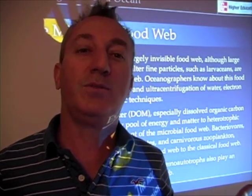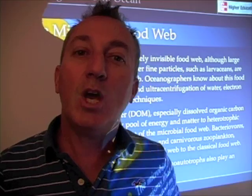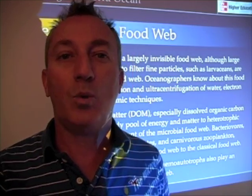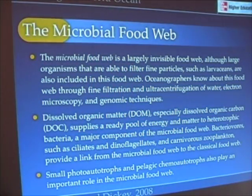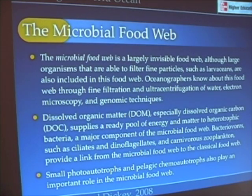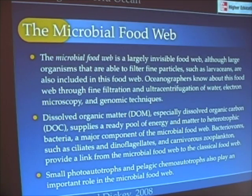The invisible microbial food web was largely unknown to us, and what we can't see is very difficult to understand until you develop ways of actually observing those kinds of organisms. This food web depends a lot on something called dissolved organic matter — dissolved organic carbon — which supplies a pool of energy to bacteria. Bacteria tend to be, in a sense, the replacement for phytoplankton in this system.